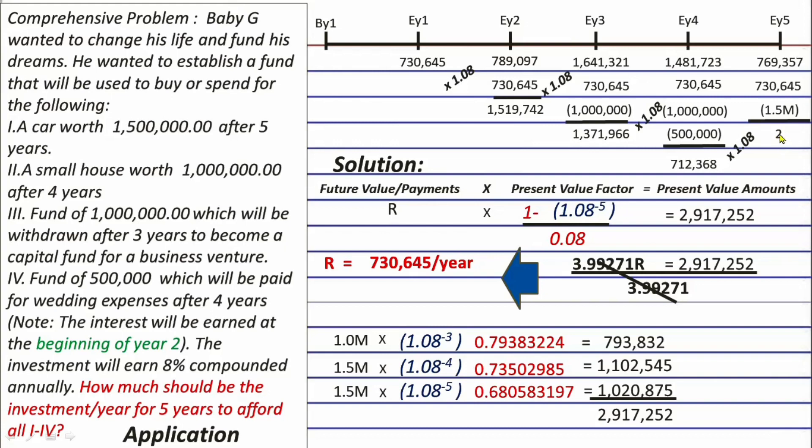Again, this is supposed to be 0 but the 2 is very immaterial, so just let it be. That's just the result of rounding off this 730,645 that we computed and the rounding off of this balance is here and here. Regardless, we have proven that Baby G should really invest 730,645 every end of the year for 5 years to afford this 1 to 4 here. That's it for the proof. Up next is the alternative solution.